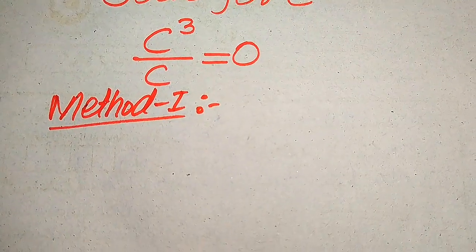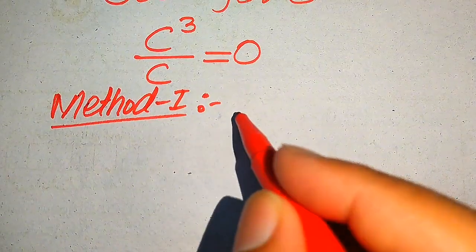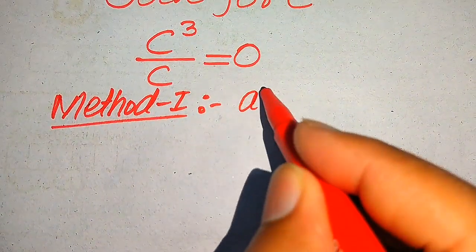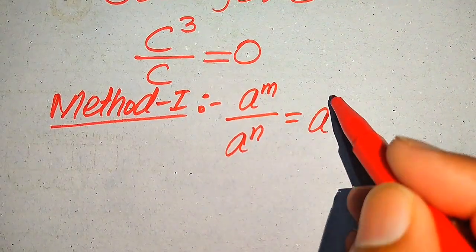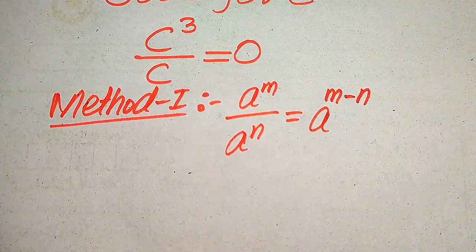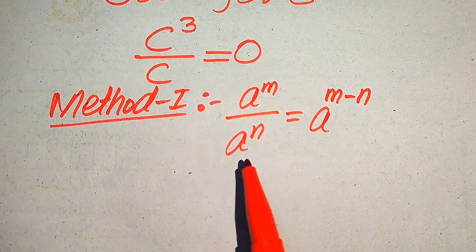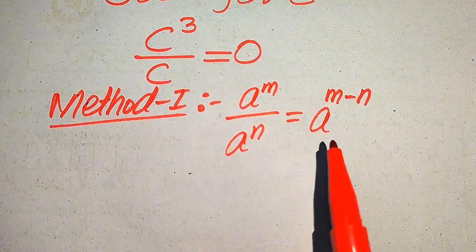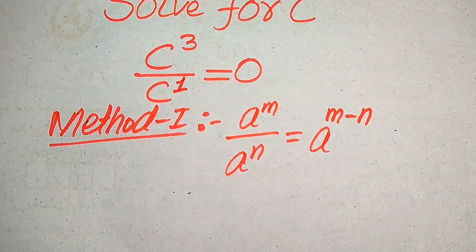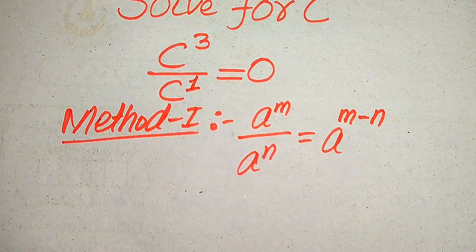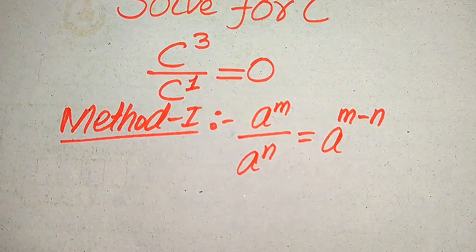In the first method we use the exponent law: if we have a to the power of m divided by a to the power of n, then it can be written as a to the power of m minus n. We move the smaller exponent towards the larger exponent. Now, focusing on the exponents of our two terms, the smaller exponent is 1 and the bigger exponent is 3.